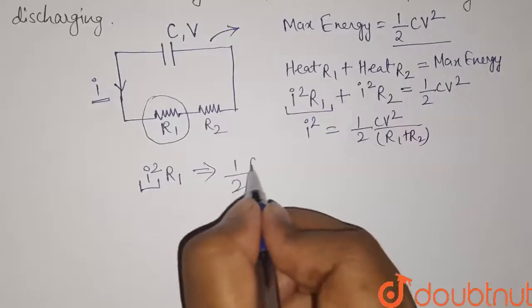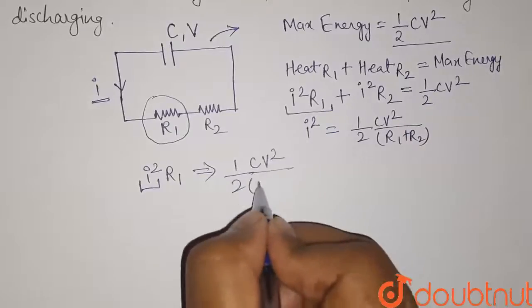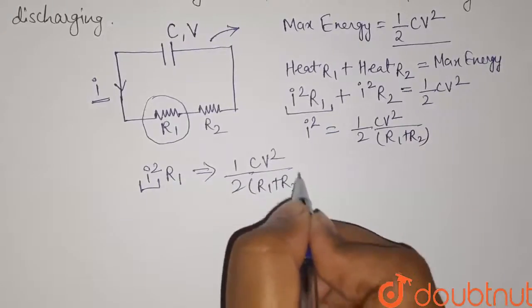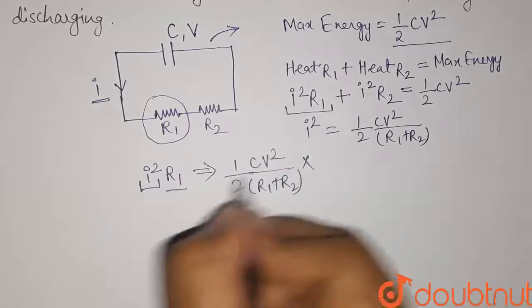So it is 1 upon 2 CV square divided by R1 plus R2 into this R1.